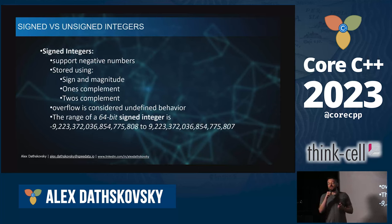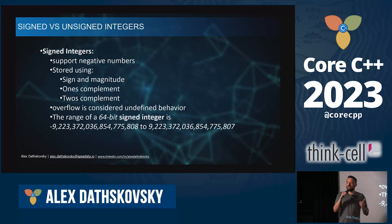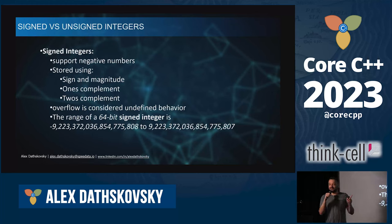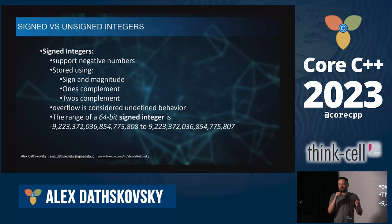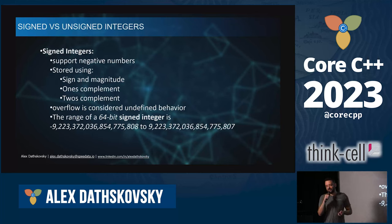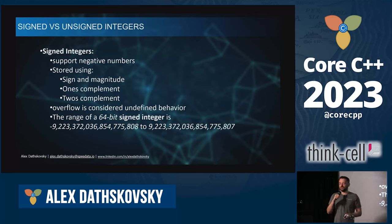Signed integers are different: they support negative numbers. They are stored using compiler-defined behavior — sign-and-magnitude, one's complement, or two's complement. Overflow is undefined behavior — a critical issue with signed integers. The range of a 64-bit signed integer spans from a large negative to a large positive number, but you represent fewer positive numbers because one bit is used for the sign.